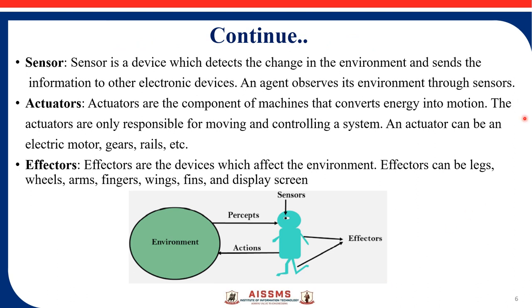Here we can see the agent, environment, percepts, actions, and effects according to the sensor. A sensor is a device which detects the change in the environment and sends information to other electronic devices. An agent observes its environment through sensors. The agent perceives from the environment, and effectors — such as legs, hands, wings, fins, display screens, and wheels — carry out the actions, which in turn reflect back on the environment.